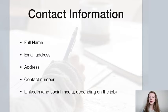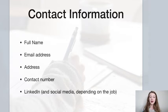Let's start with the contact information. What kind of contact information do we need to put on our CV? Of course, your full name. We need your email address — that's important. Your address, and a contact number. This can be a mobile number, or if you have a landline in your house, you may want to put that as well.